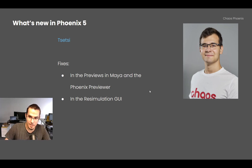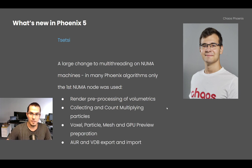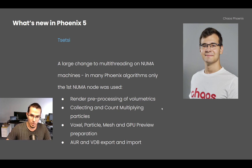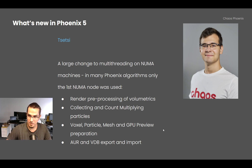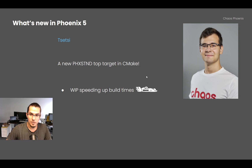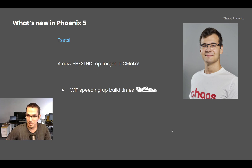Tetsi did fixes in the Maya previews, the Phoenix previewer, and the re-simulation user interface. He made a large change to the NUMA multithreading of Phoenix — many algorithms were only using the first NUMA nodes rather than all of them. These include pre-processing of volumes and particles, most Phoenix previews, and saving and loading of Aura and VDB cache files. He also created a new Phoenix standalone build target in CMake to speed up iteration and build times.